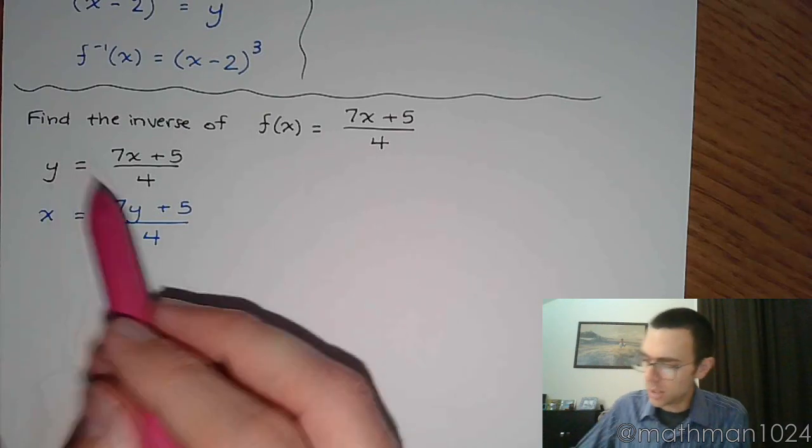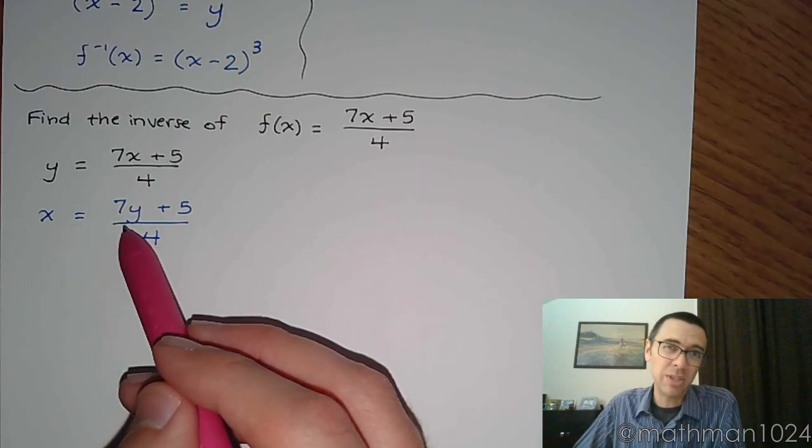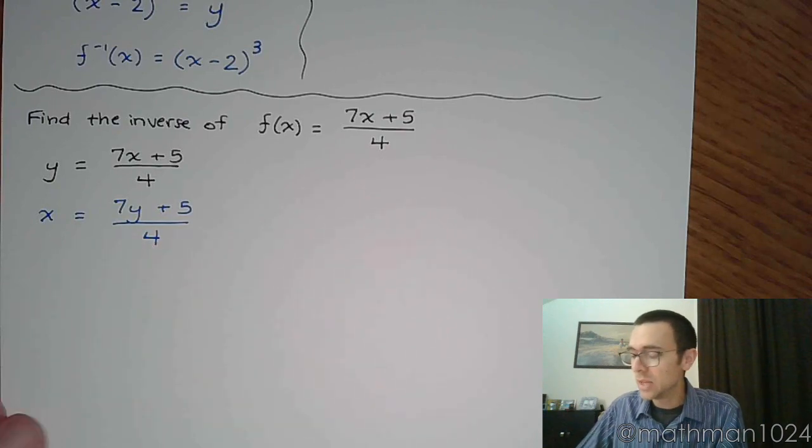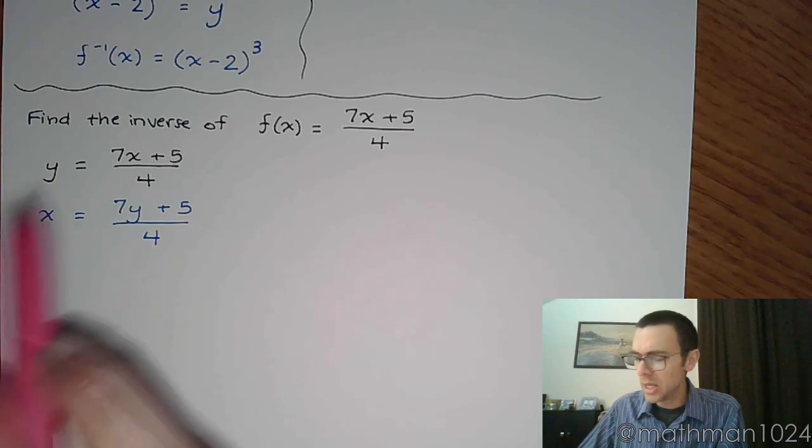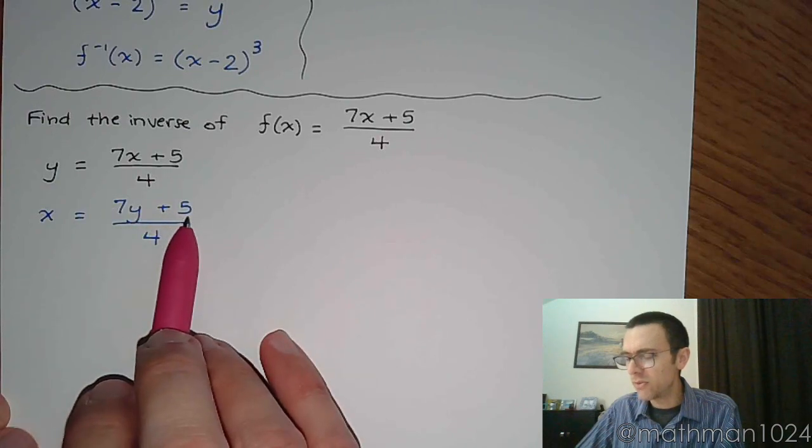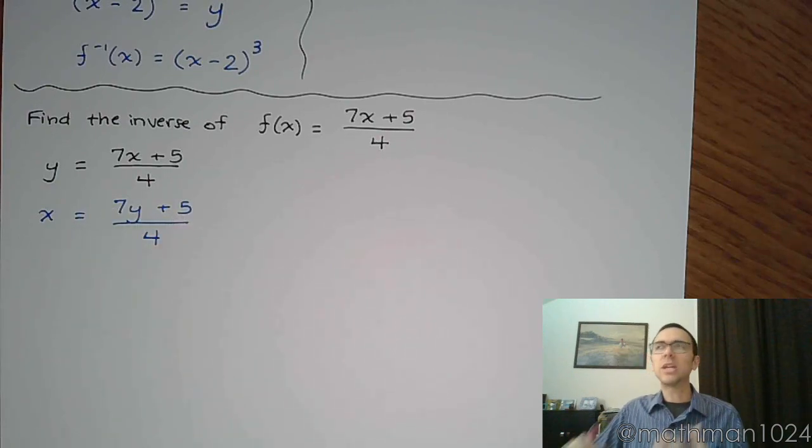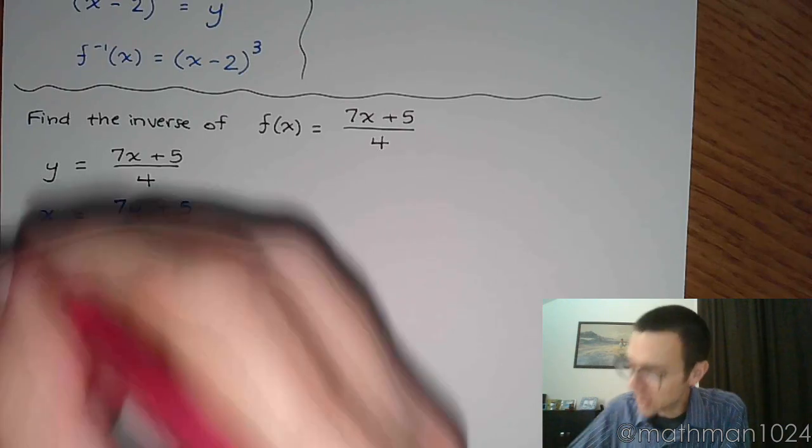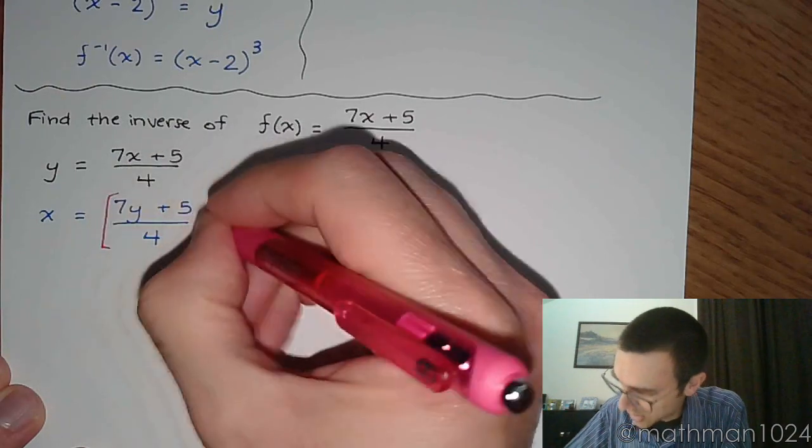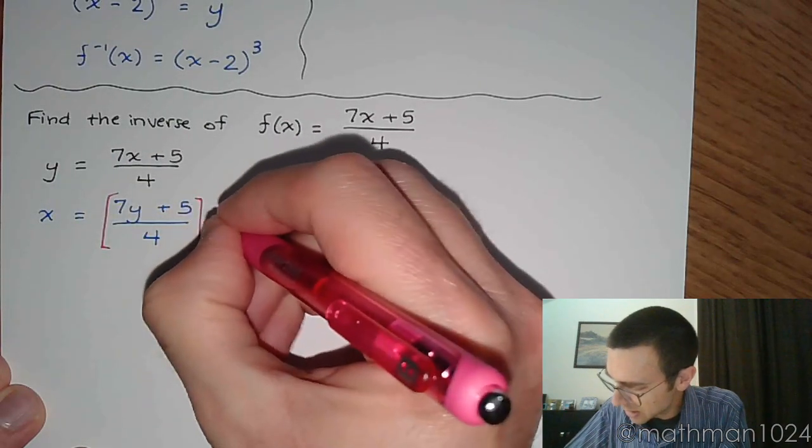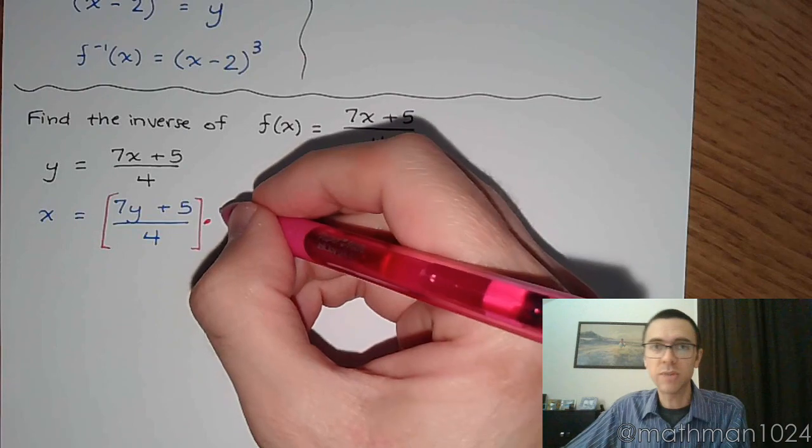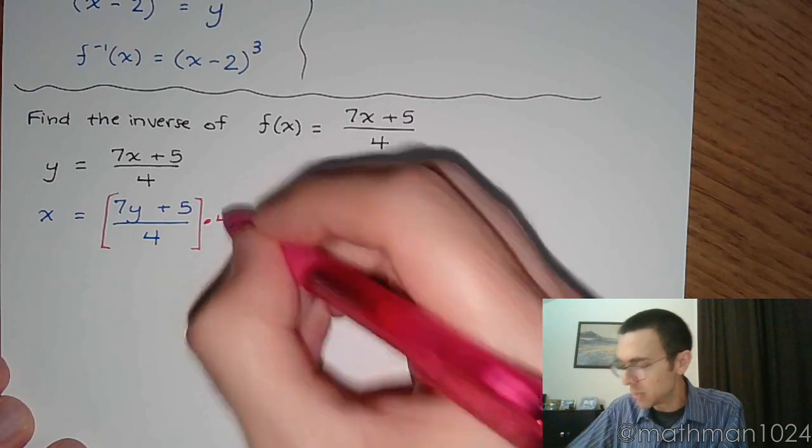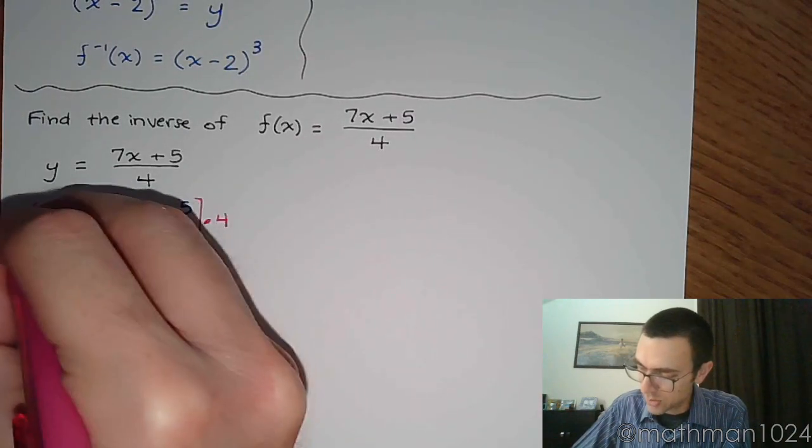Now this is where you take those steps to get y by itself. So here's y up here, all by himself. Well, he's not by himself. We're going to get him by himself. The first thing we're going to do is, let's see, you don't want to mess with the 7 or the 5, but you want to mess with the thing, you want to get rid of the thing that's affecting everybody, and that's the 4. The 4 is the denominator for the entire right side. So I'm going to undo that with the inverse operation, so instead of dividing by 4, multiply times 4. And we do that on both sides.